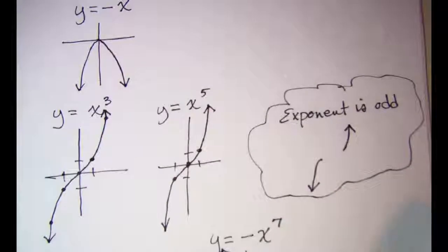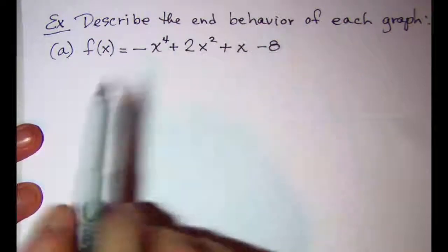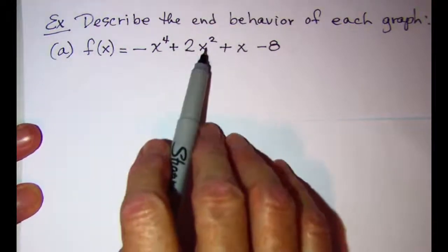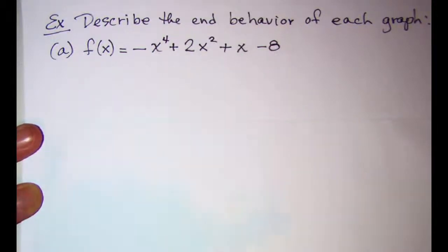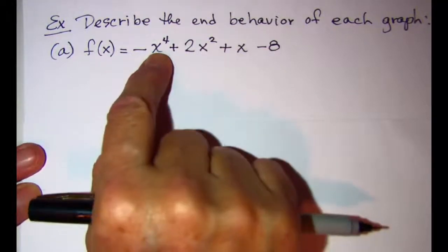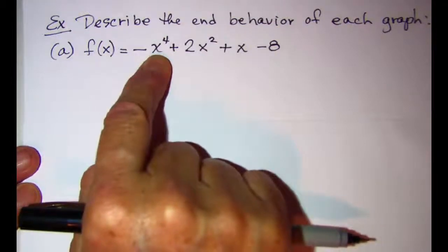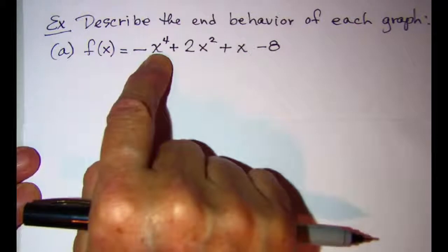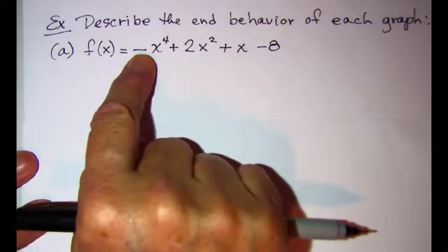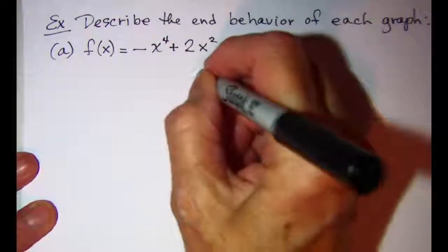Now let's do a couple of examples. We are asked to describe the end behavior of each graph. Our first example is f(x) equals negative x to the fourth plus 2x squared plus x minus 8. The dominant term here is negative x to the fourth power. First, we have an even exponent, which means both arms at the ends will be pointed in the same direction. Then, notice the negative coefficient — instead of both arms pointing up, the end behavior for this function is going to be both arms down.